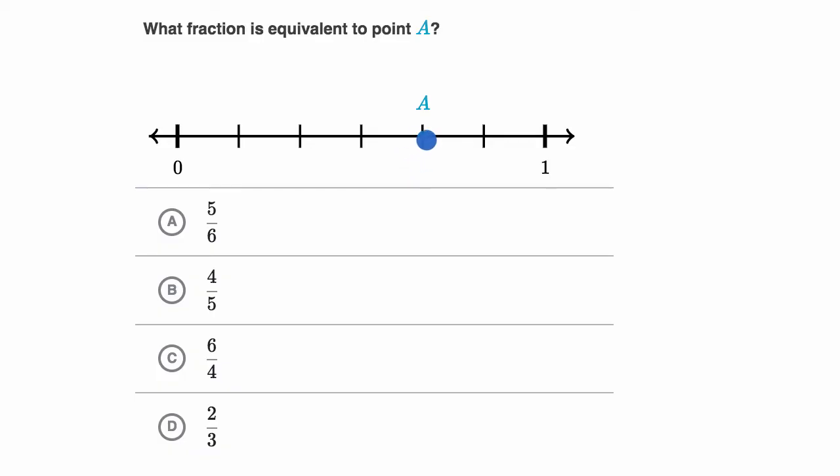All right, so let's figure out where point A is. So to go from zero to one, we have one, two, three, four, five, six equal jumps. So each of these jumps are a sixth.